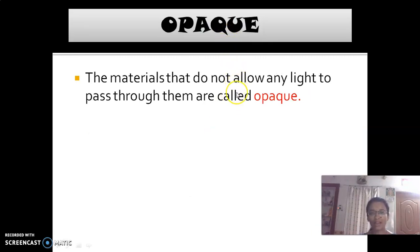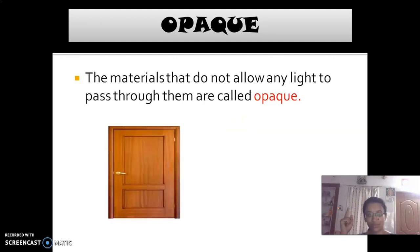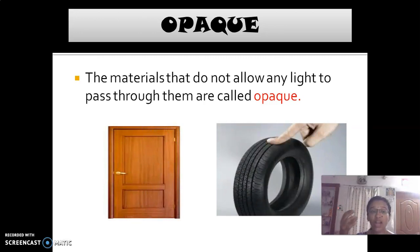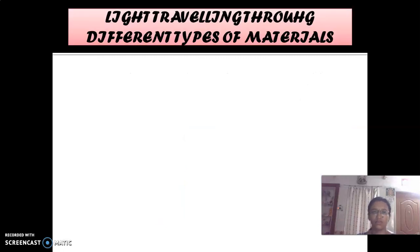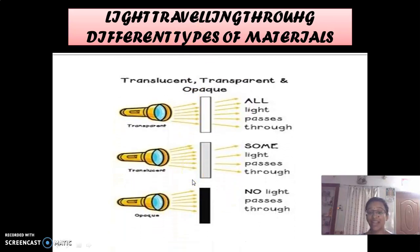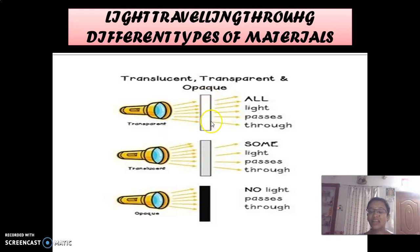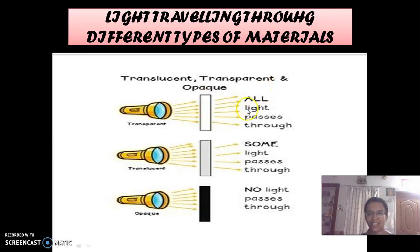The next property is opaque. These materials do not allow any light to pass through them. Examples of opaque materials are wood and tire. In the case of transparent materials, all light passes through. For translucent, only some light is absorbed. Whereas for opaque, no light passes through at all.